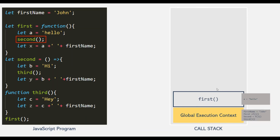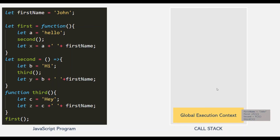So we are back to the first function. This variable x will be stored in the execution context of the first function. And then the execution of this first function is also complete. Since the execution of this first function is complete, the execution context of this first function will also get popped off from the execution stack. And like this, we executed all three functions and popped them off from the stack when each function finished its execution. Now the global execution context is again the current execution context.